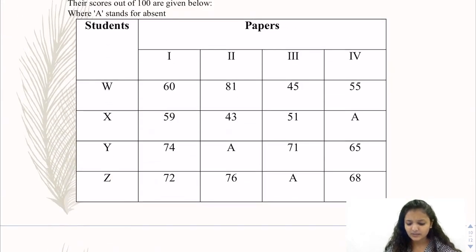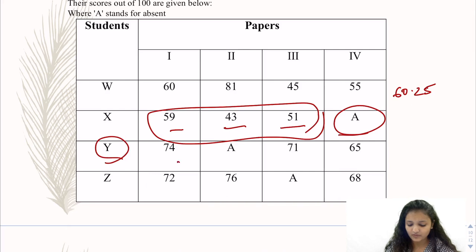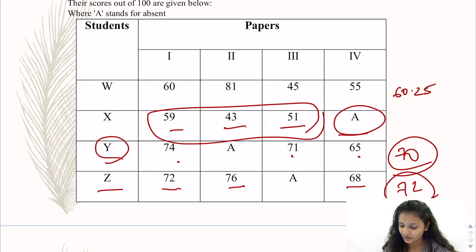So 60 plus 81 plus 45 plus 55 divided by 4 will be 60.25. Then we have student Y which is 74 plus 71 plus 65 divided by 3, so 70 will be the percentage. And then Z is 72 plus 76 plus 68 divided by 3 which will be 72 percent.